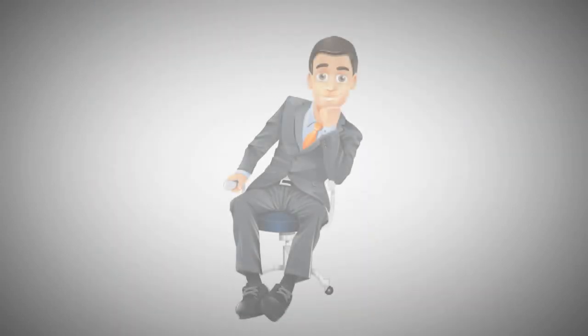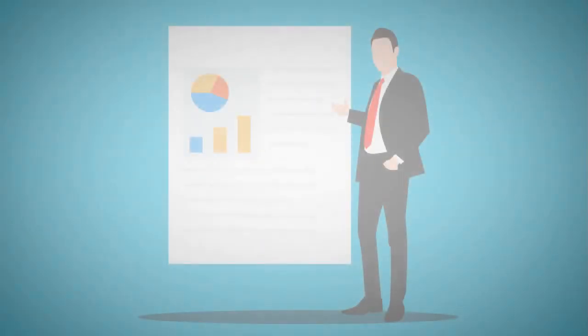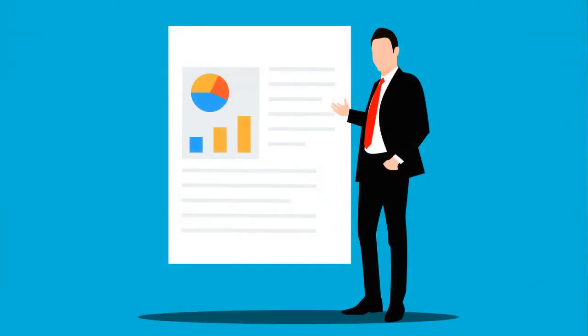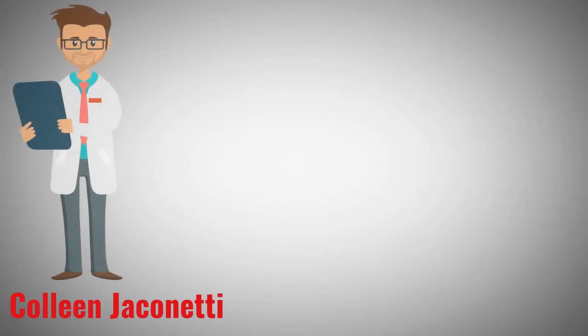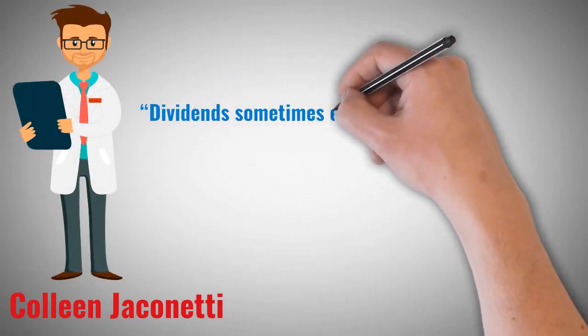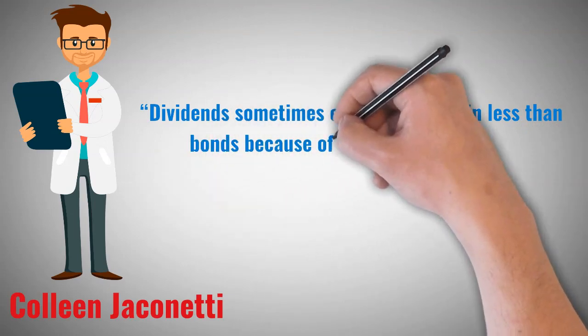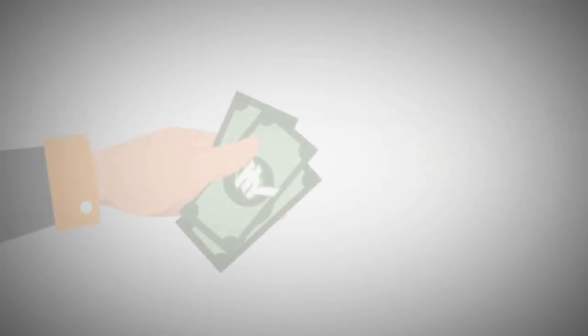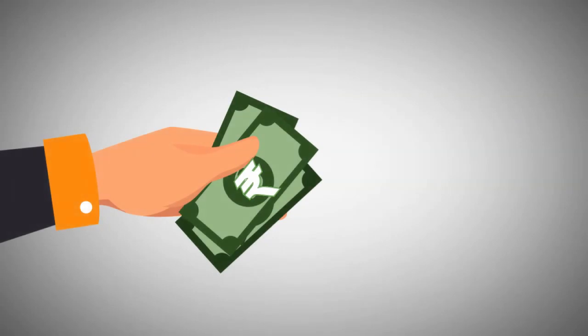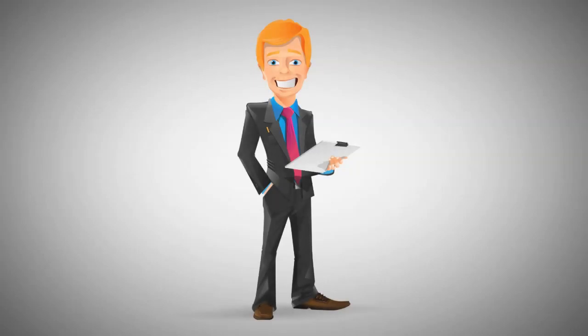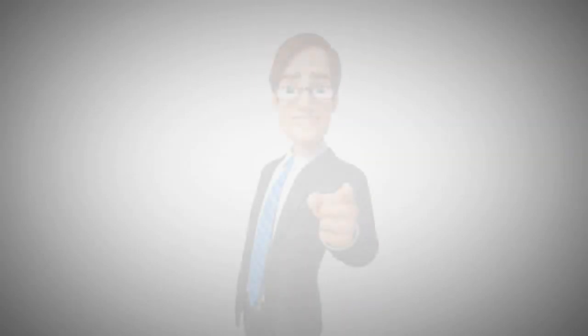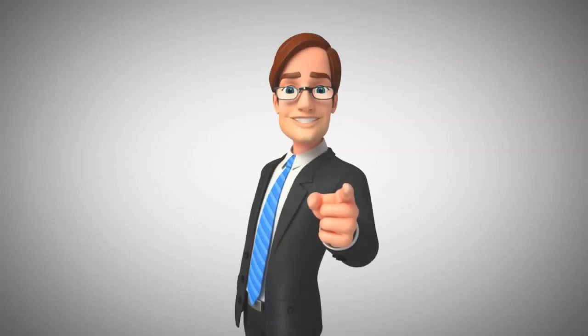Investors also can detrimentally obsess over yield. For instance, investors often flock to dividend-paying stocks, but as Colleen Giaconetti, Vanguard senior investment analyst, said, dividends sometimes end up bringing in less than bonds because of taxes and changes in the prices of stocks. For instance, if you spend $100 on a stock, after your $5 dividend, the stock may be worth $95, meaning your final wealth is $100. On the other hand, if a $100 bond pays $3 in coupon interest, your final wealth is $103.